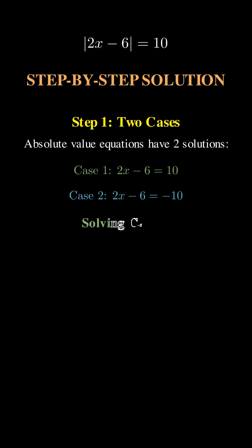Case 1. What if 2x minus 6 is positive? Then 2x minus 6 equals 10. Let's solve. Add 6 to both sides. 2x equals 16. Divide by 2. x equals 8. That's our first answer.